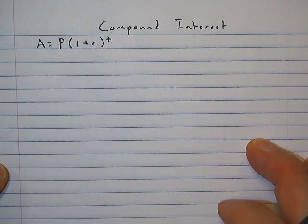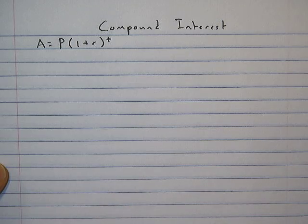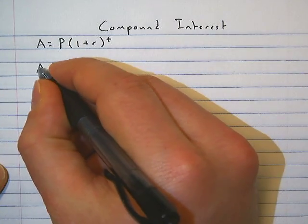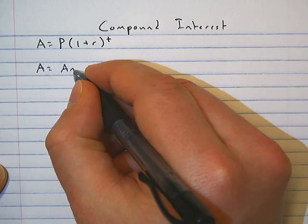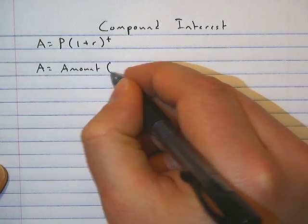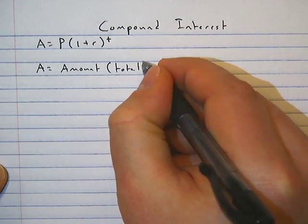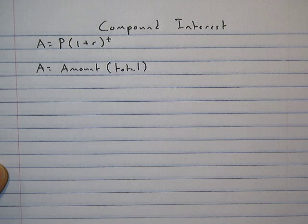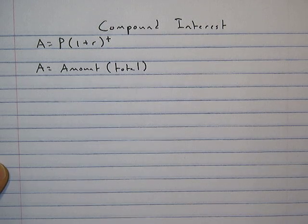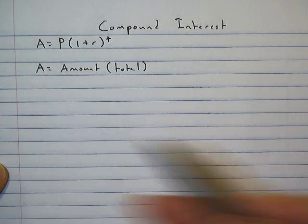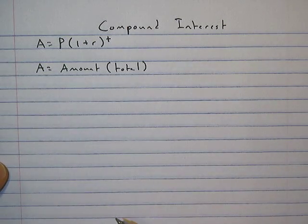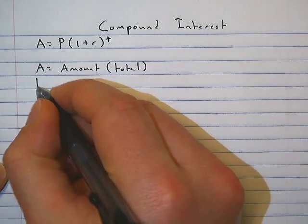Now, if you recall, with simple interest we were calculating just the interest. With compound interest, A is equal to the amount or the total—the principal plus the interest. So if somebody asks you for just the interest, you would take your amount and subtract the principal to get the interest you earned.